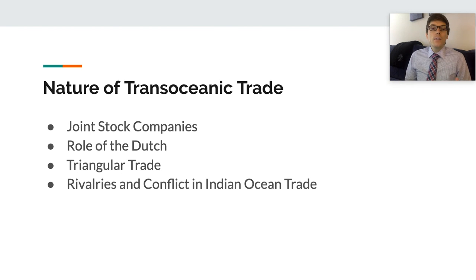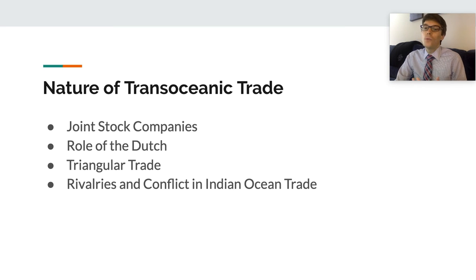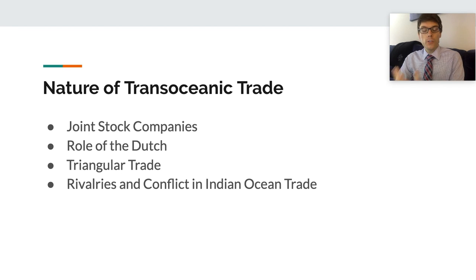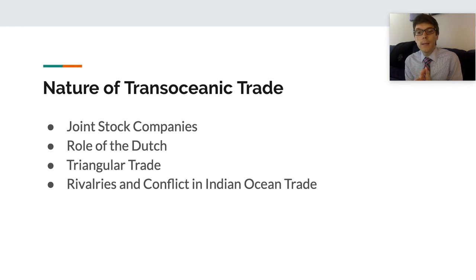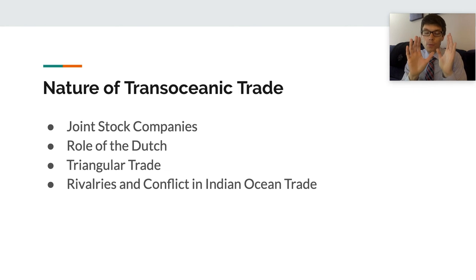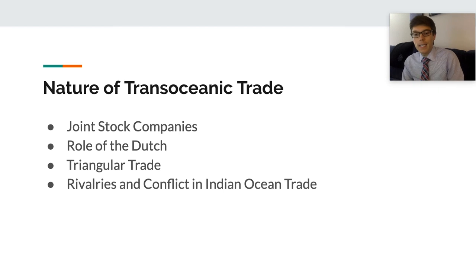Joint stock companies were especially popular among the Dutch, English, and French in the 17th century. Two prominent examples are the British East India Company, created in 1600, and the Dutch East India Company, created in 1602. In Spain and Portugal, the government did most of the investing itself through grants to certain explorers — think of the commissioning of Christopher Columbus. Joint stock companies were a driving force behind maritime empires, especially in North America among the Dutch, British, and to a lesser extent the French, more so than in South America.